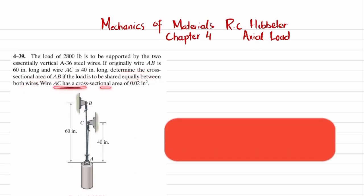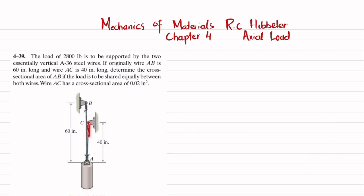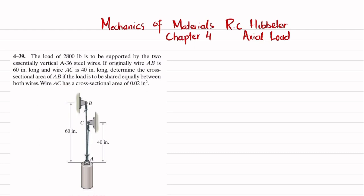Wire AC has a cross-sectional area of 0.02 square inches. You can see this is the load suspended by two rope wires, AC and AB, made of A36 steel. The length of AB is 60 inches, the length of AC is 40 inches, and the cross-sectional area of AC is 0.02 square inches. We have to find the cross-sectional area of AB.